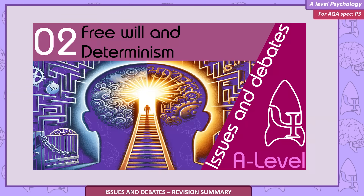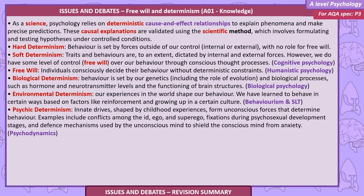Free will and determinism. As a science, psychology relies on deterministic cause-and-effect relationships to explain phenomena and make precise predictions. These causal explanations are validated using the scientific method, which involves formulating and testing hypotheses under controlled conditions.